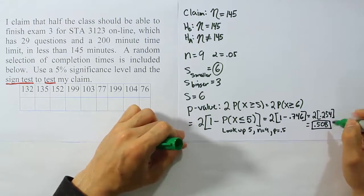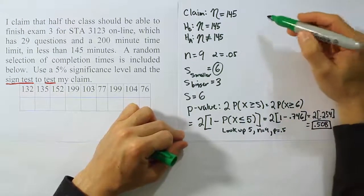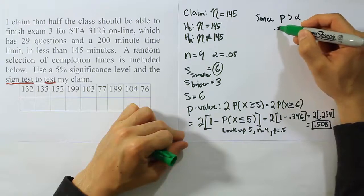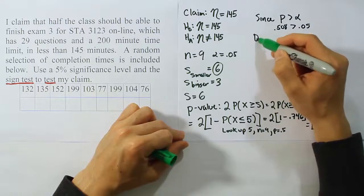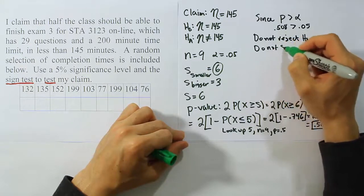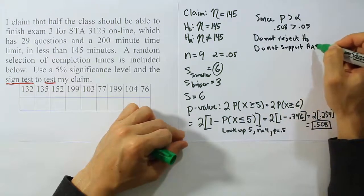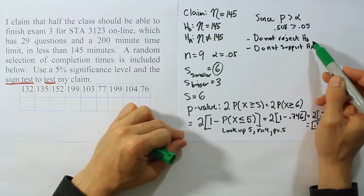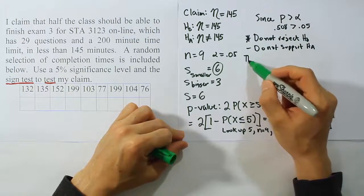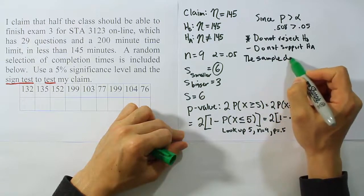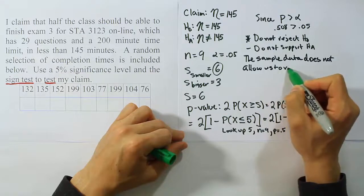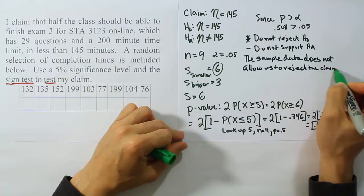Okay, so with that being our p-value, when you compare that against alpha, you're going to see that it's quite larger than alpha. So since p is greater than alpha—because p is 0.508 which is greater than 0.05—we do not reject H0, and therefore we do not support HA. Okay, so there's our pair of initial conclusions. And since our claim is the same as H0, we're going to be using this wording: do not reject H0. So we'll say the sample data does not allow us to reject the claim. And that's it.